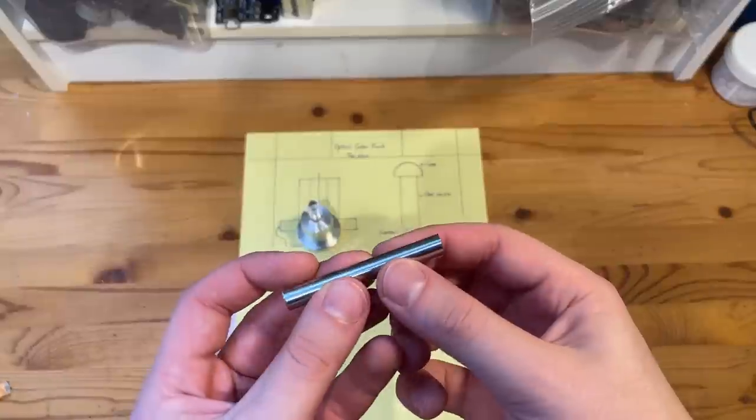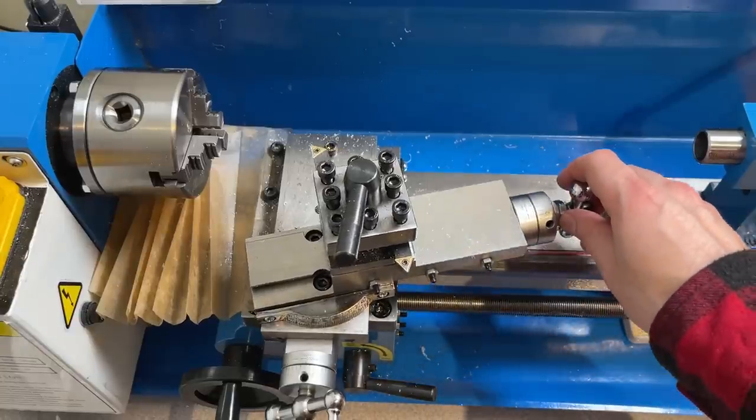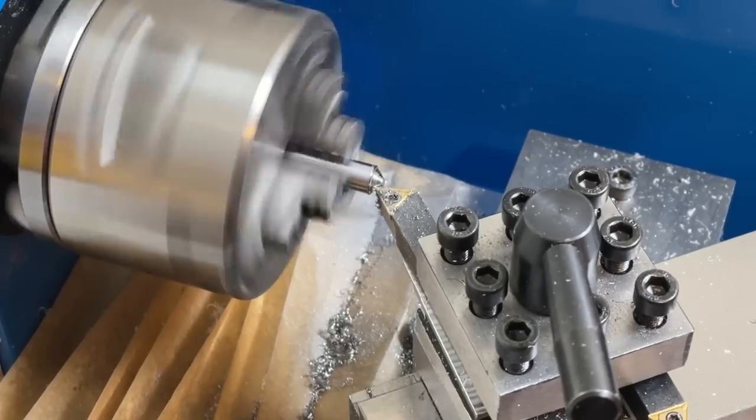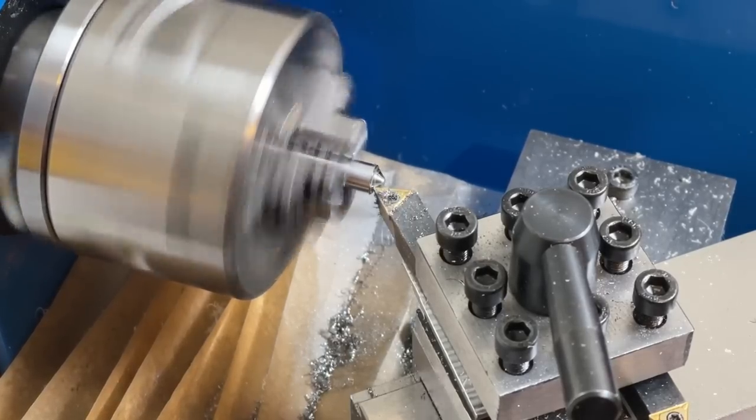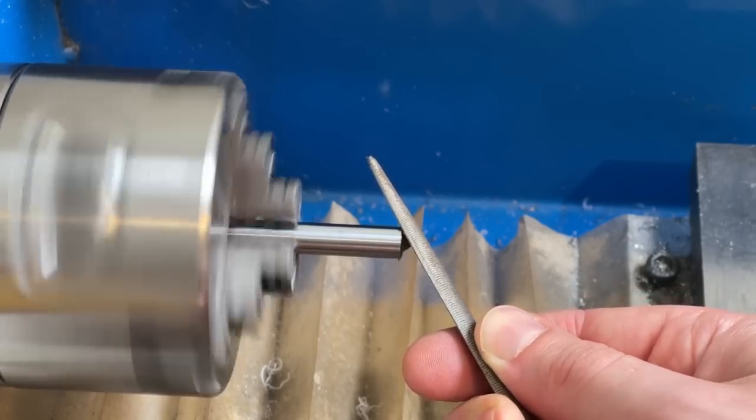So, last thing is to create the center punch portion of the optical center punch, and this was done simply by turning the cross slide 45 degrees, mounting the rod in lathe, and turning the material to a point. I came in with a file at the end to clean up the edge and give it a small chamfer, and now we're good to test this thing out.